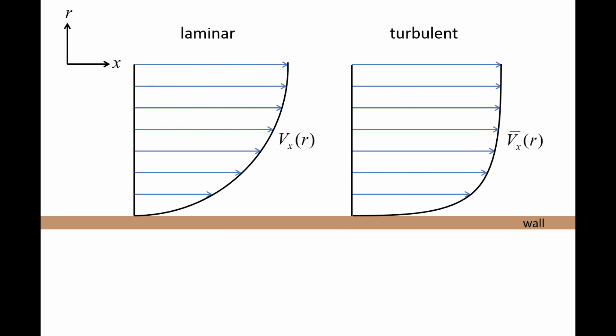The reason why the turbulent velocity profile is flatter than the laminar velocity profile can be understood by examining how mixing occurs in both types of flows. On the left, we have half of a laminar velocity profile, and on the right, we have half of a turbulent velocity profile. The velocity at the wall is zero in both profiles due to the no-slip boundary condition.